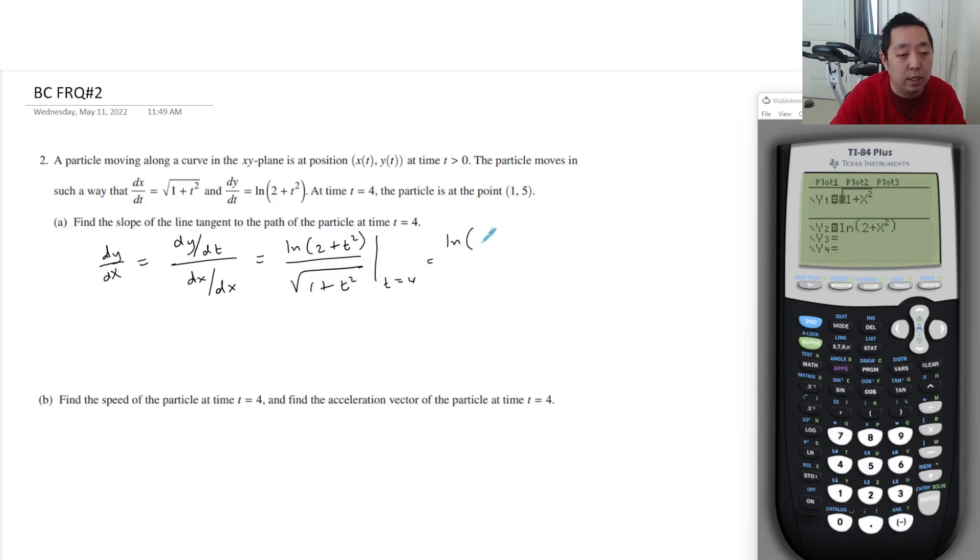They already gave you the derivative at t equals four. So that's ln of two plus—you could just use your calculator for that. Because two squared is—sorry, four is four squared. I'm messing up. This is why I should use my calculator. It's ln of 16 plus two is 18, and then that's square root of 17 there. So that's going to be ln 18 divided by square root of 17, and that is 0.701.